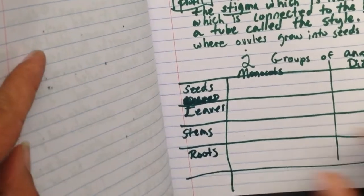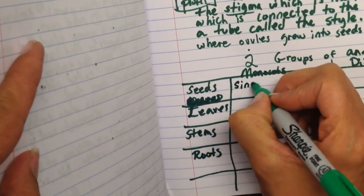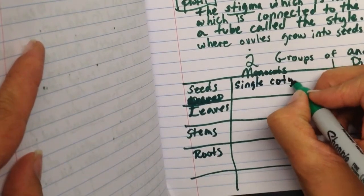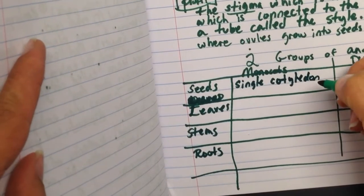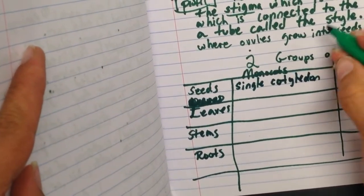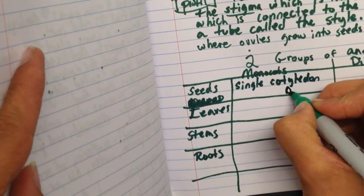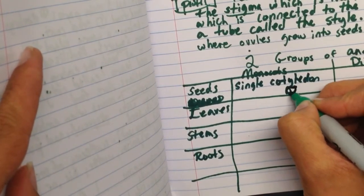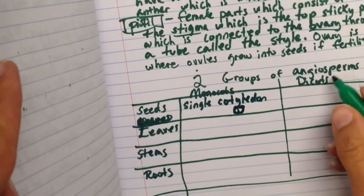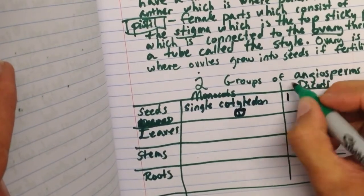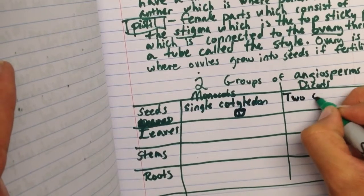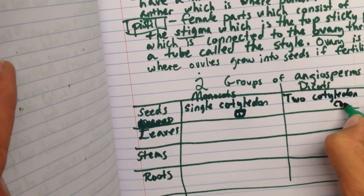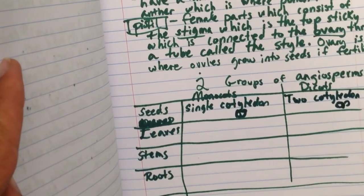So the seeds of monocots, what distinguishes them is that they have a single cotyledon, those little leaves that are part of the embryo. So I'll just draw a single leaf coming here. Whereas in a dicot, we have two cotyledons, which is why it's called a dicot, two cotyledons. So we have our seed with two leaves.